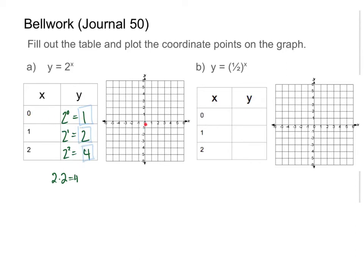Looking at the graph, the first point is at (0, 1), so I'll plot it at zero up one right here. The next is at (1, 2), so one up two. And then (2, 4), so two up four, right about there. I'm going to draw a line to connect them.